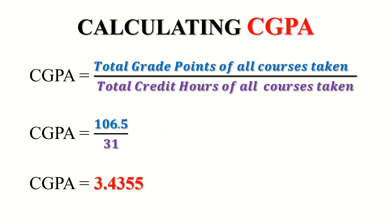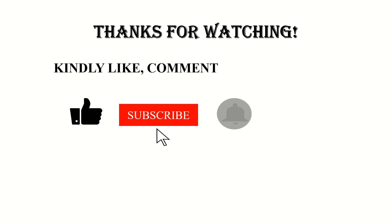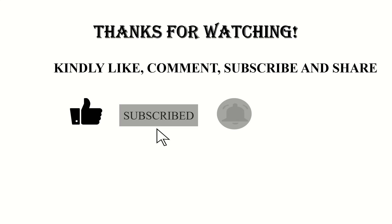Basically, we can calculate the CGPA regardless of the level we are at. We take all the grade points, sum them, take all the credit hours, sum them, and find their ratio — that becomes our CGPA. This ends this video. Thanks for watching — kindly like, comment, subscribe, and share. See you in our next video.